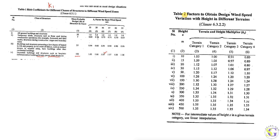In Table 2 of the code, values are clearly given starting from 10 meter height, and depending on your category 1, 2, or 3, you pick the respective value. If your building height is between 25 and 35 meters, you need to interpolate to get the values for the respective categories.